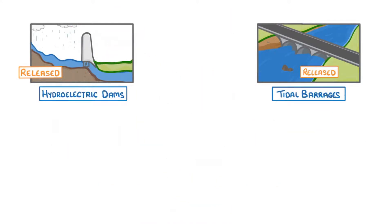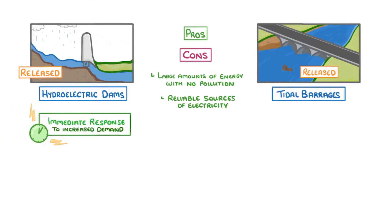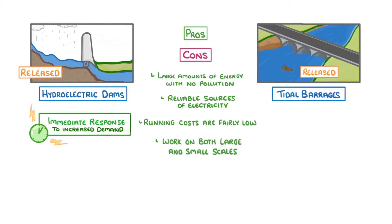The last thing we need to cover are the pros and cons of each type. In both cases, we can generate large amounts of energy with no pollution. They're also very reliable sources of electricity. Hydroelectric dams in particular can provide an immediate response to an increased demand. Another benefit of both methods is that the running costs are fairly low, and they can work on both large and small scales.